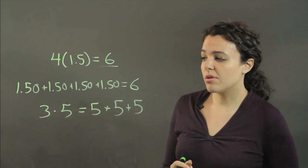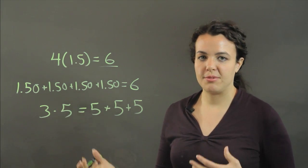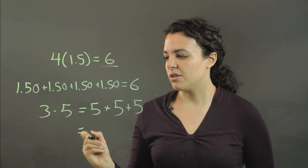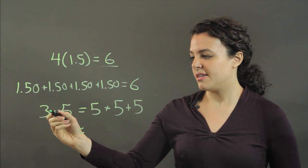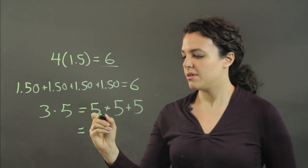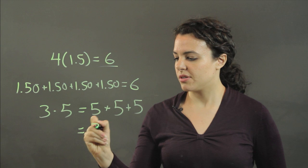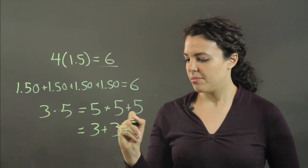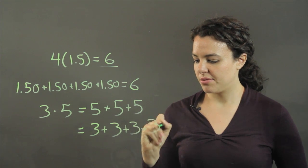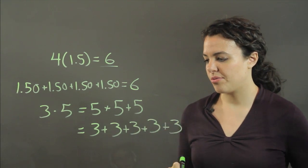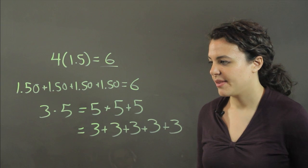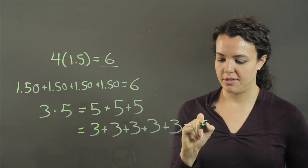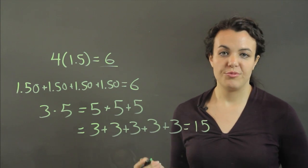Or since three times five is the same as five times three, it's also three being added five times. So I could also say it's three plus three plus three plus three plus three, and they all end up equaling 15.